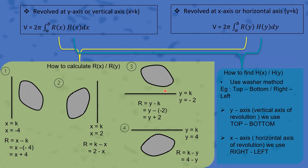If the shaded region is above the line y equals k, we take r equals y minus k. If the shaded region is below the line y equals k, we take r equals k minus y. To find h(x), we use the same approach as the washer method: top minus bottom or right minus left — that means the top function minus the bottom function, or the right function minus the left function.